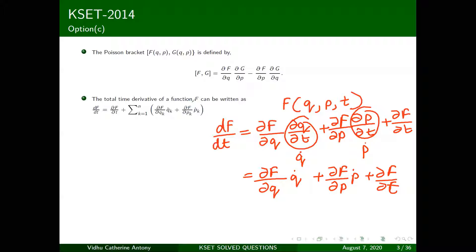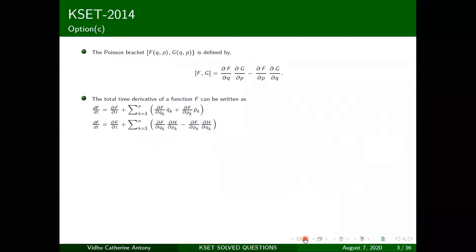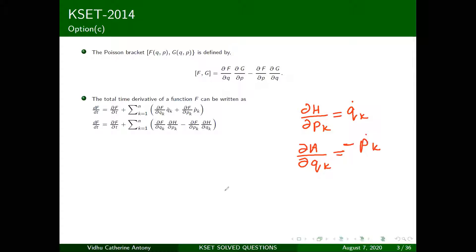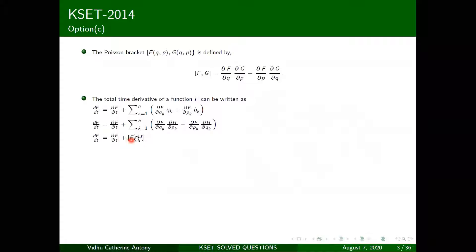For n sets of coordinates, we have a sum over (∂f/∂q_k)·q̇_k + (∂f/∂p_k)·ṗ_k + ∂f/∂t. Now, using Hamilton's equations: ∂H/∂p_k = q̇_k and ∂H/∂q_k = −ṗ_k. Substituting these, the expression looks exactly like the Poisson bracket of f and H.